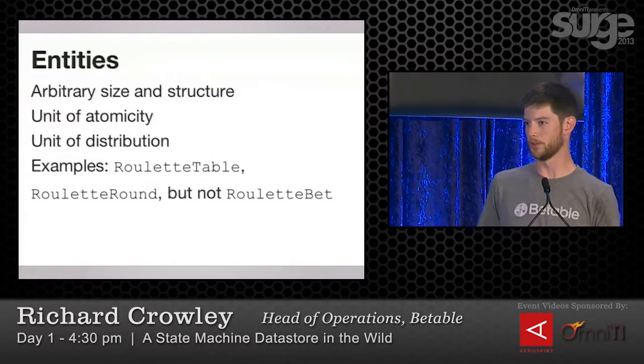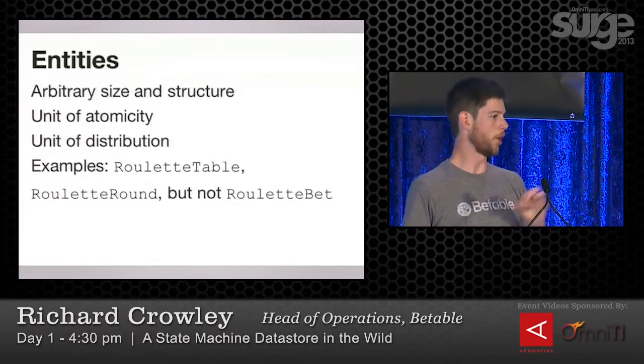An entity — I've used the word a couple of times and we need to define it. It's a piece of data with an arbitrary size and arbitrary but predefined structure. There is schema in this system; it's not just a document store. The schema is enforced by a statically typed programming language. These entities are special in that they are the unit of atomicity in the system — you can make guarantees that you'll never observe a partial write to an entity. That's part and parcel with getting the serializability we're after. An entity is also the unit of distribution — the data store routes entities to various nodes to balance everything out, and that's transparent to the user.